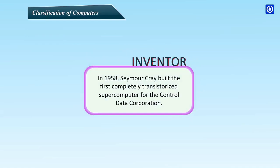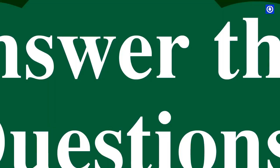In winter of 1958, Seymour Cray built the first completely transistorized supercomputer for the Control Data Corporation.